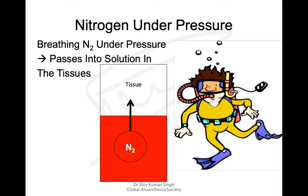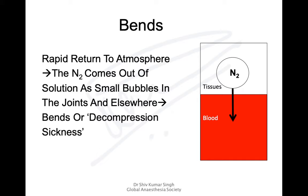For people who do scuba diving, they breathe from a cylinder containing oxygen and nitrogen. When going underwater, the atmospheric pressure increases and nitrogen moves into the solution phase of the tissues. But if the diver ascends very quickly, the nitrogen comes out of solution as small bubbles into the joints and other tissues, which can cause pain and complications in the brain — this is known as decompression sickness. Treatment involves putting the diver in a hyperbaric chamber or requiring a slow ascent.